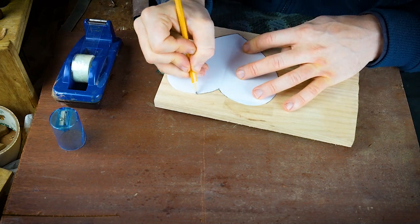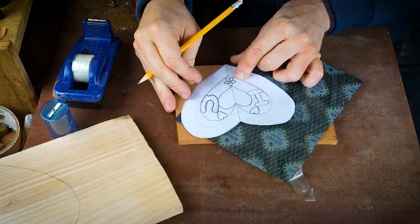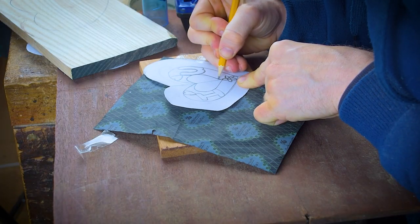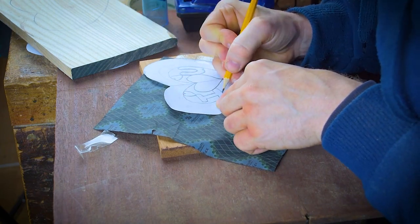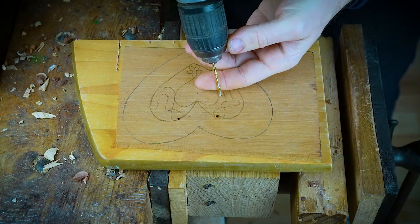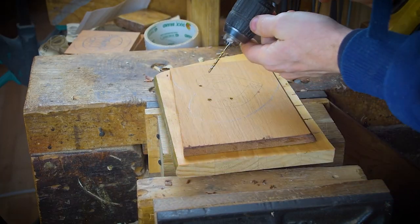On to our next project and this one is a plaque, and we're demonstrating how you can scroll saw out words. To start it off, as always you mark out your design on the wood itself, you then put your pilot holes for doing that pierce work, and start cutting out the project on the scroll saw.